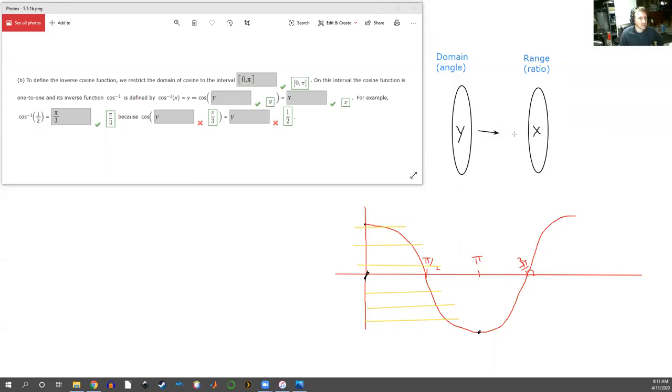So that's what cosine does. This gives cosine of y equals x. Now cosine inverse goes in the other direction. It takes some ratio and tells us what angle gave us that ratio through the cosine function.